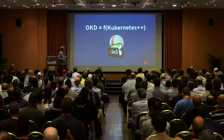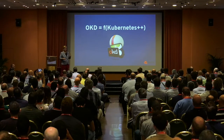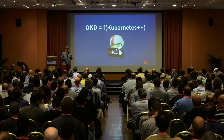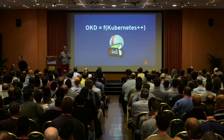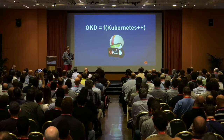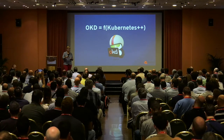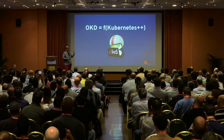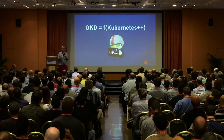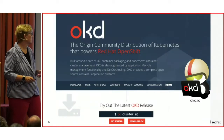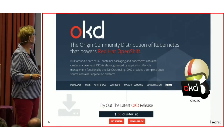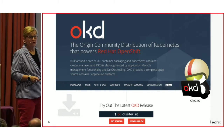OKD, if you didn't know, is the rebranded OpenShift Origin — the open source project. It doesn't stand for anything specifically because legally, Kubernetes is a brand owned by the CNCF, so you'll see things like GKE or PKS or similar names. Basically, OpenShift has become a function of Kubernetes plus a lot of other things. So OKD is basically a community distribution of Kubernetes, and it's the one that powers OpenShift. Everything is still in a repo called Origin.